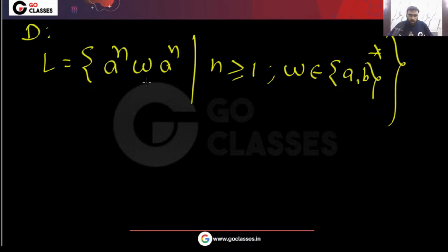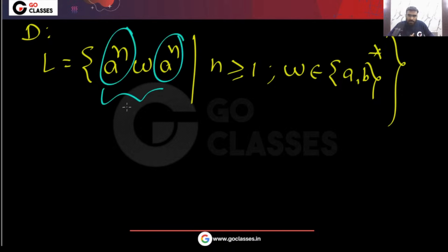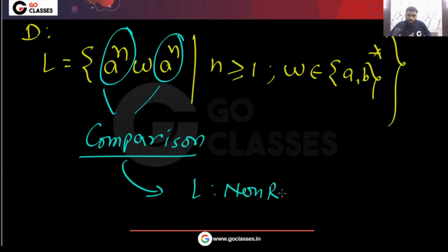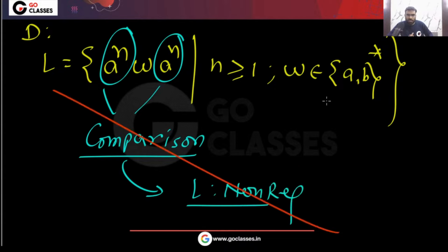Some students will think: there is a^n and a^n, so there is a comparison. Because there is unlimited comparison, L is not regular. Let me tell you — this is nonsense. If you are thinking like this, this is wrong.